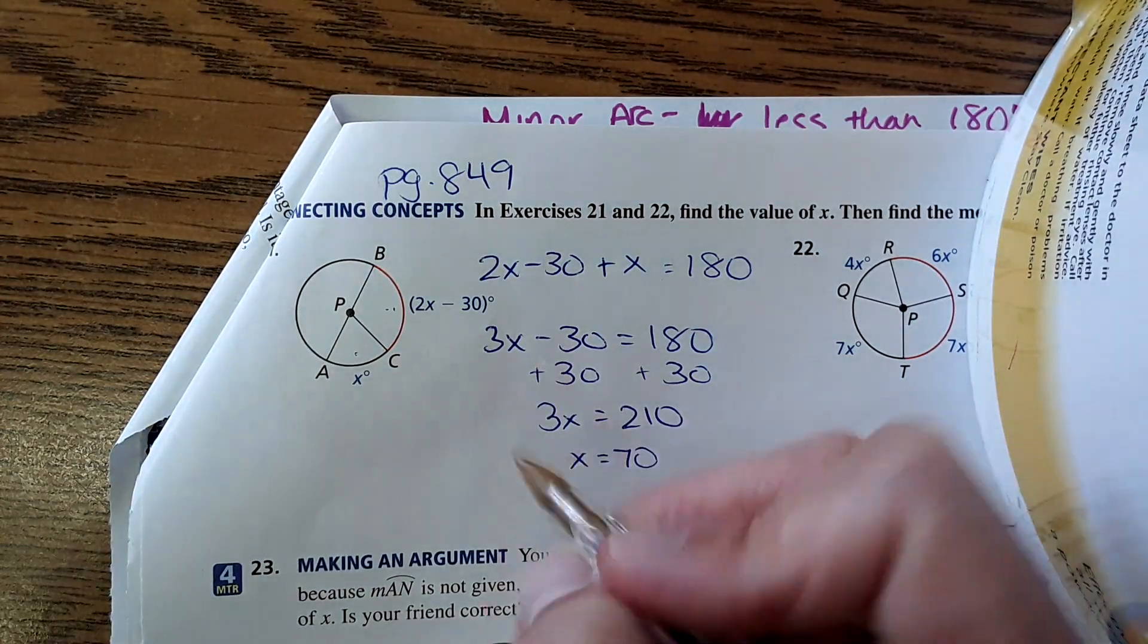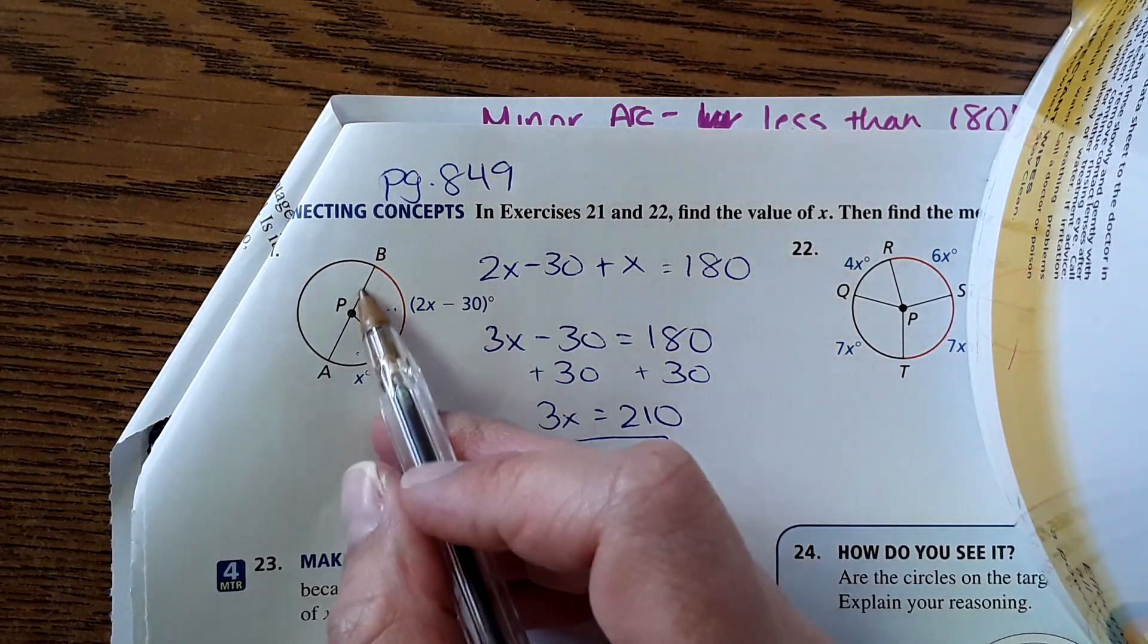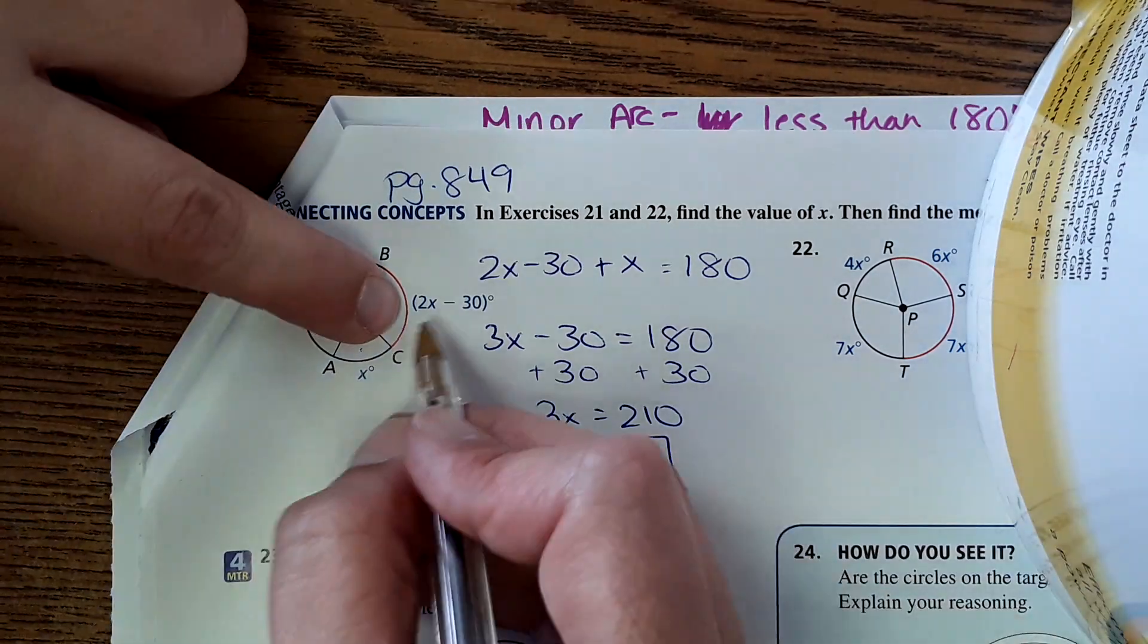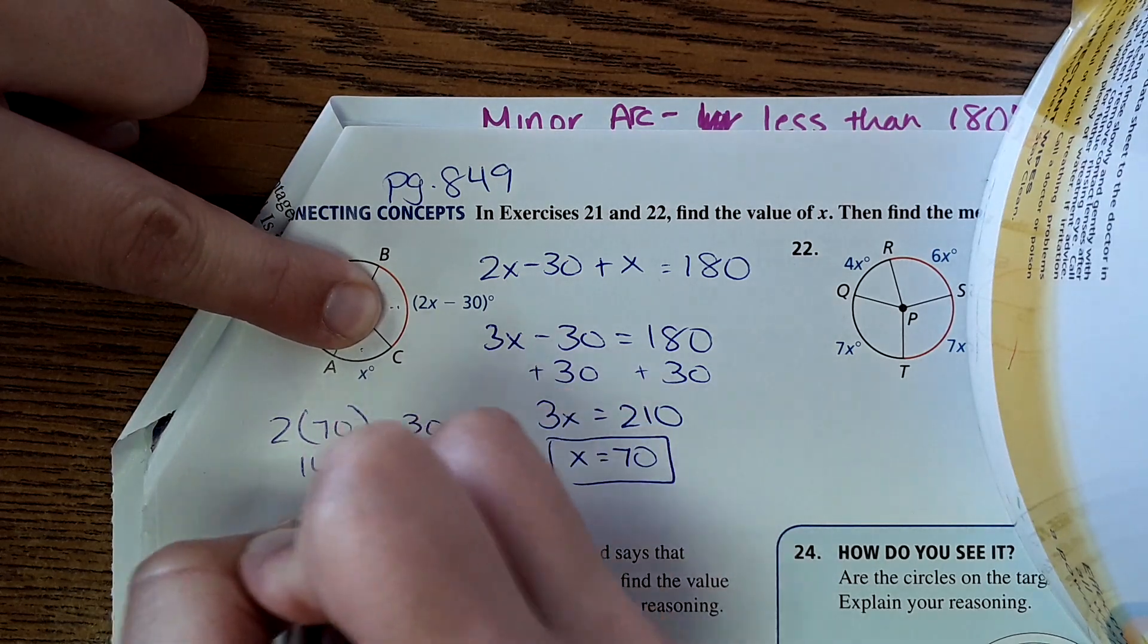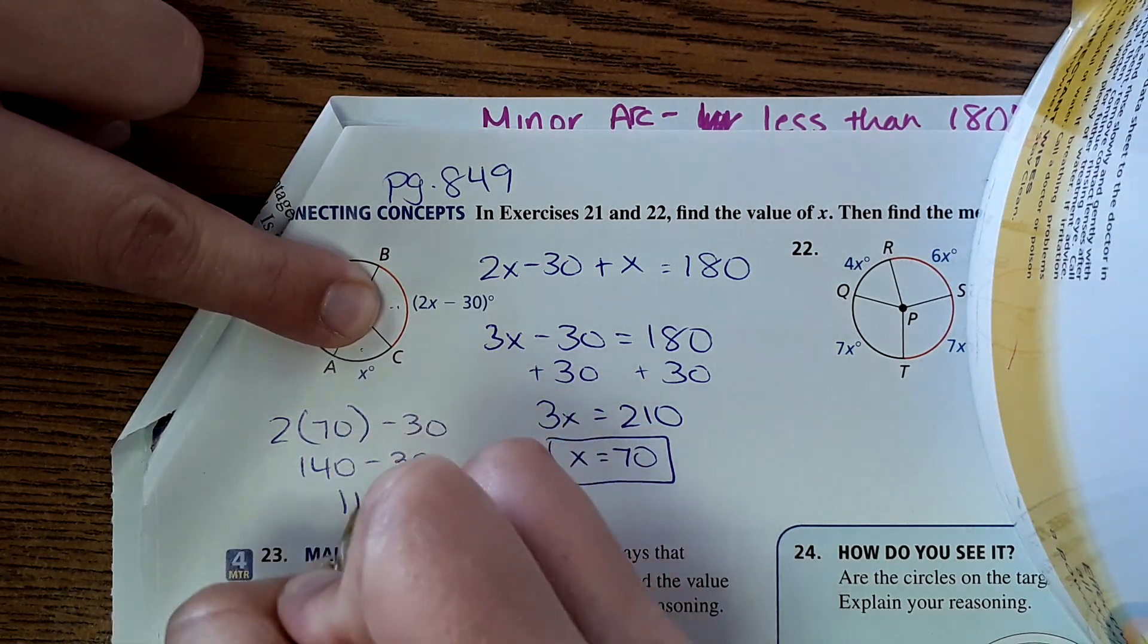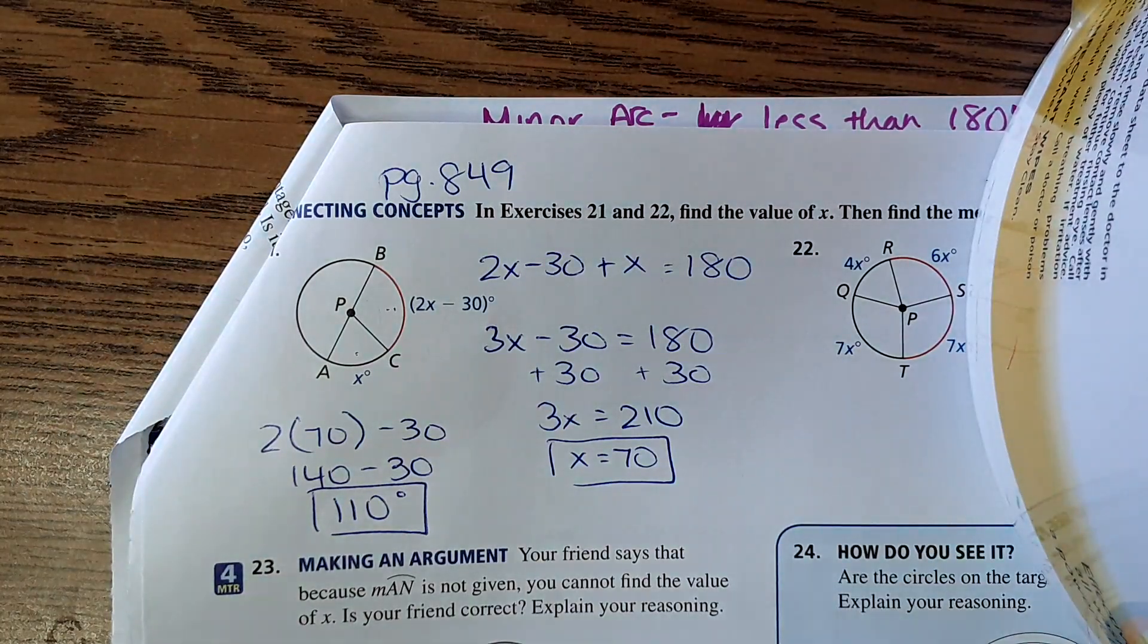Okay, we get x equals 70. It wants us to find the measure of the red arc, so to find that you can just plug that into the expression, 2 times 70 minus 30. Of course just make sure it's logical based on the picture and you should be good.